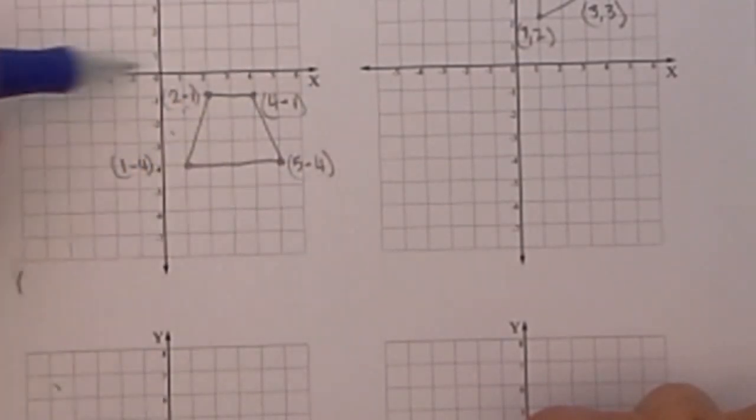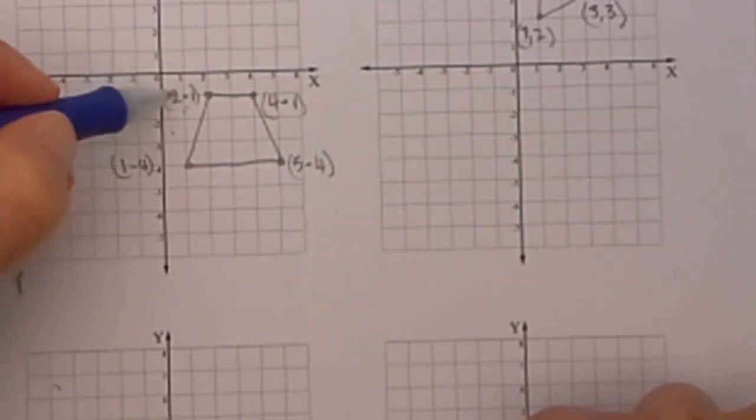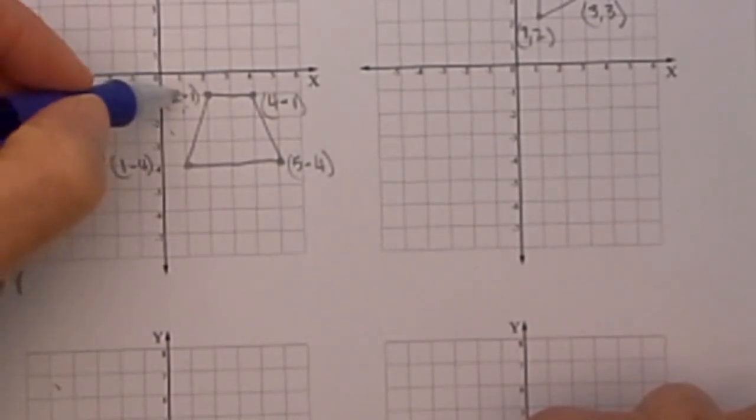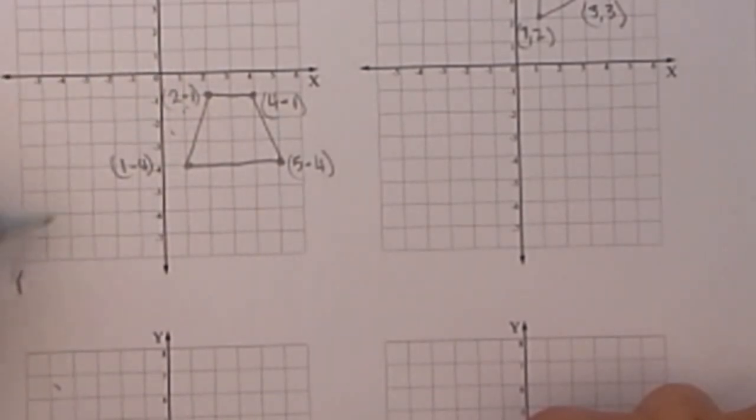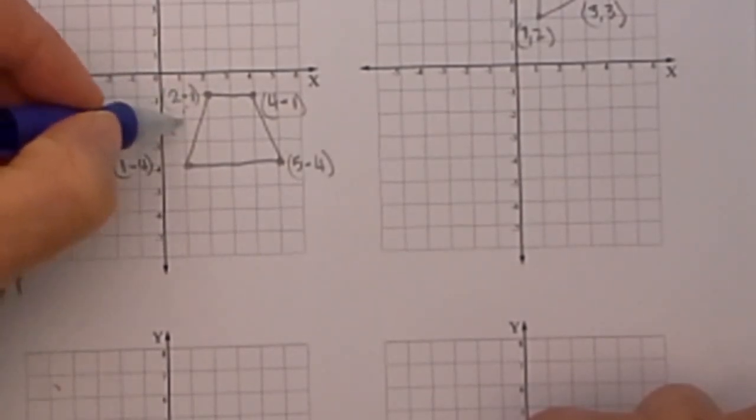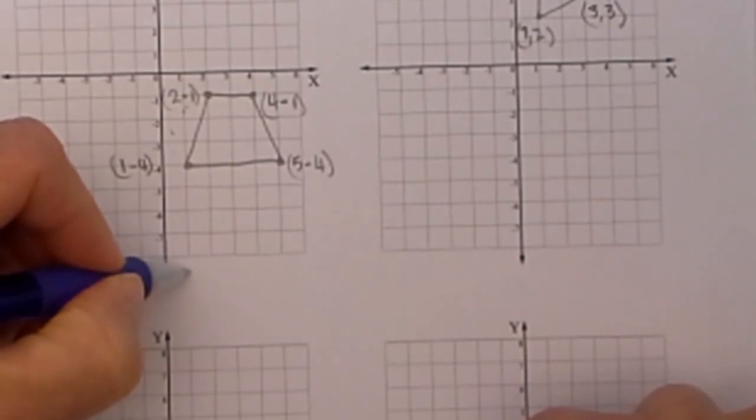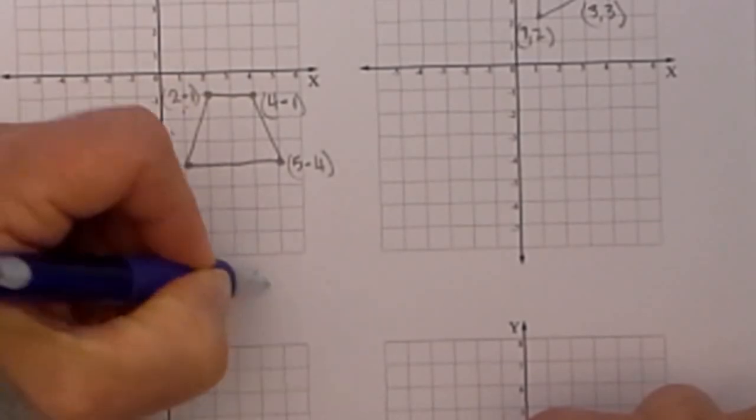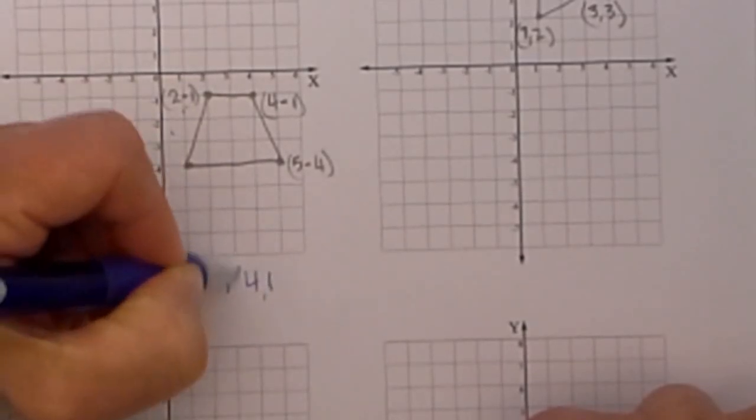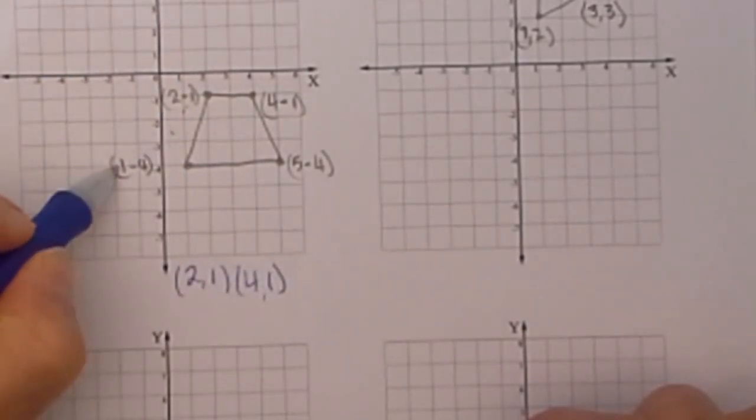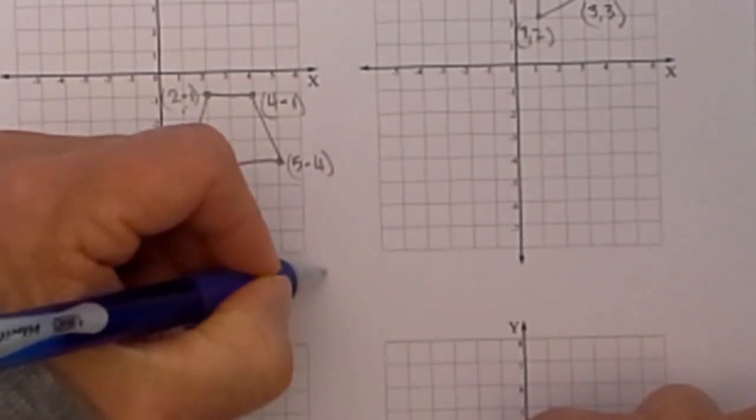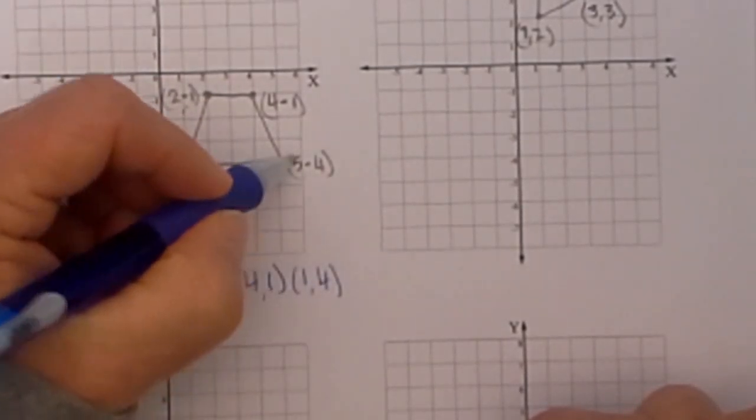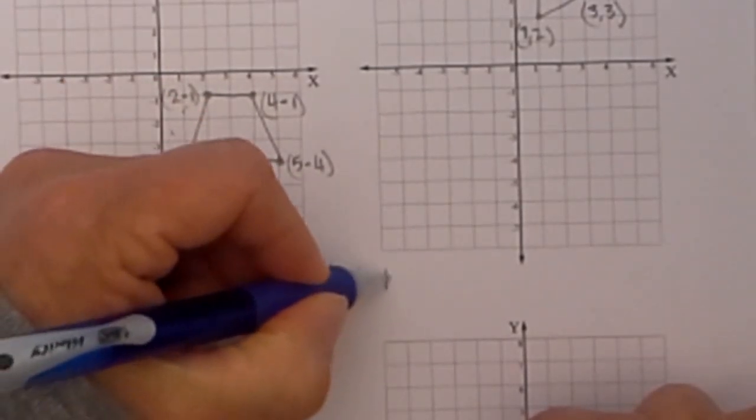I am going to reflect over the x-axis. The x-axis will stay the same and the y-axis will change. I am going to rewrite the coordinates and then plot them. Since we are reflecting over the x, the x will stay the same. So it will become (2, 1), (4, 1), (1, 4), and finally (5, 4).